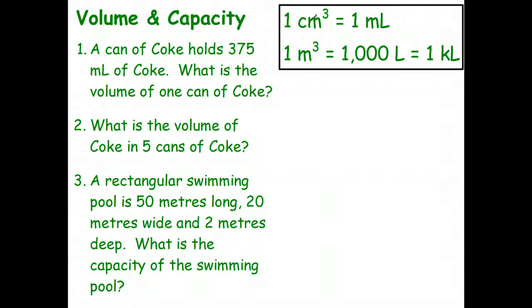If you recall from the previous video, when we converted cubic centimeters to cubic meters, there were a million cubic centimeters in one cubic meter. That means there's a million milliliters in one cubic meter. If I divide a million by 1,000, I end up with 1,000 liters.